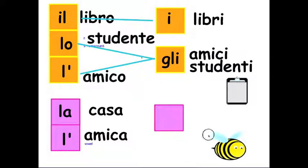The plural, you only have, sorry, round box. LE is your feminine plural. Le case, le amiche. There is no apostrophe in any of the plurals. So this is the definite article in Italian.